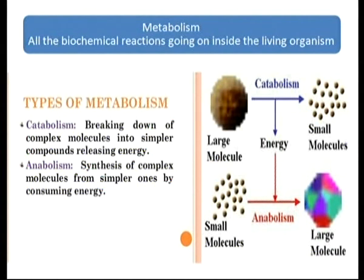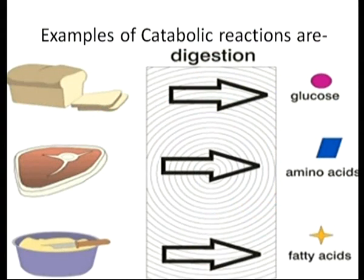In catabolism, large molecules are broken down into simpler molecules and energy is released. In anabolism, complex or larger molecules are synthesized from simpler ones and energy is required. For example, digestion is a catabolic process — we eat bread and it is broken down into glucose; proteins are broken down into amino acids; fats are broken down into fatty acids. Cellular respiration is also a catabolic reaction where glucose is oxidized to form carbon dioxide, water, and energy.